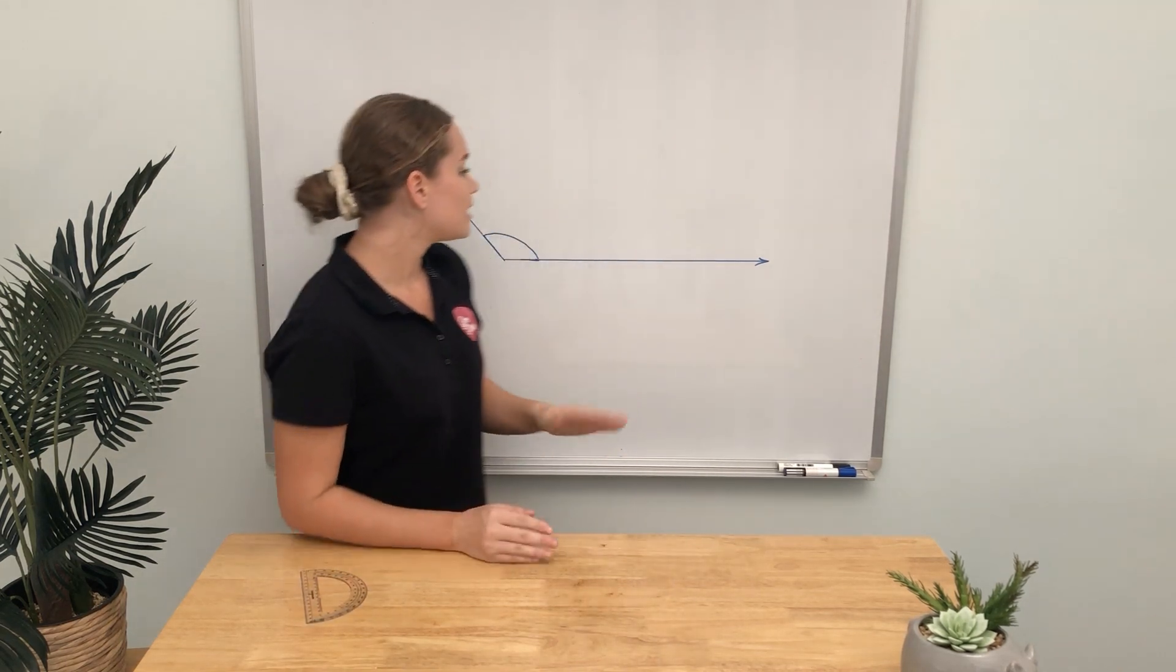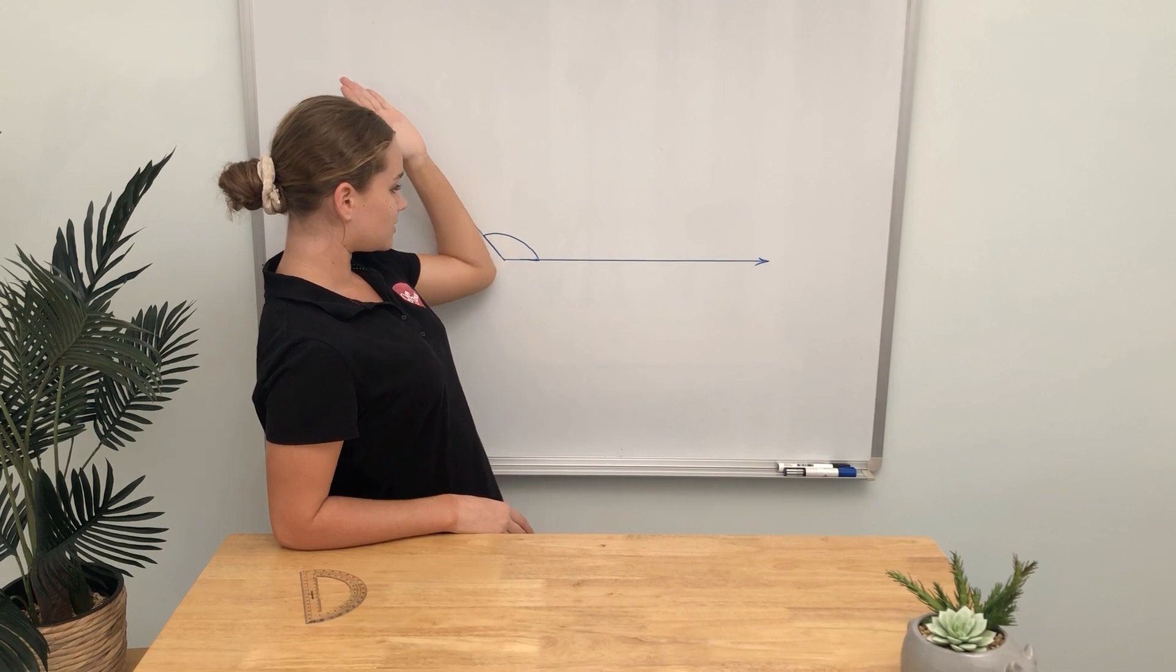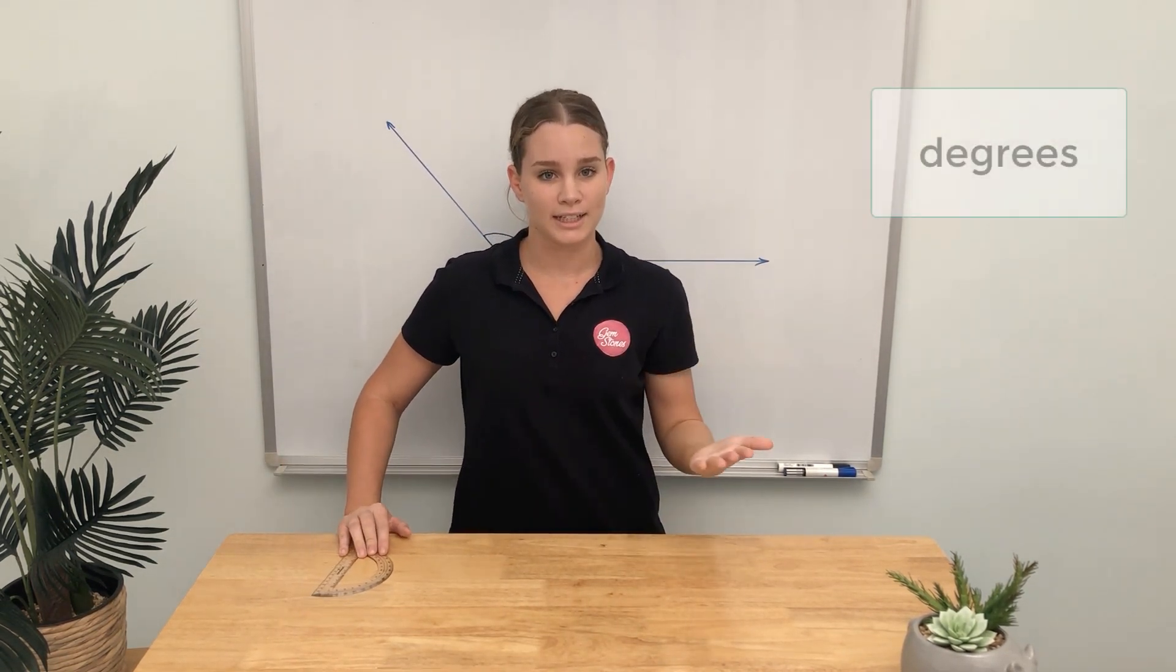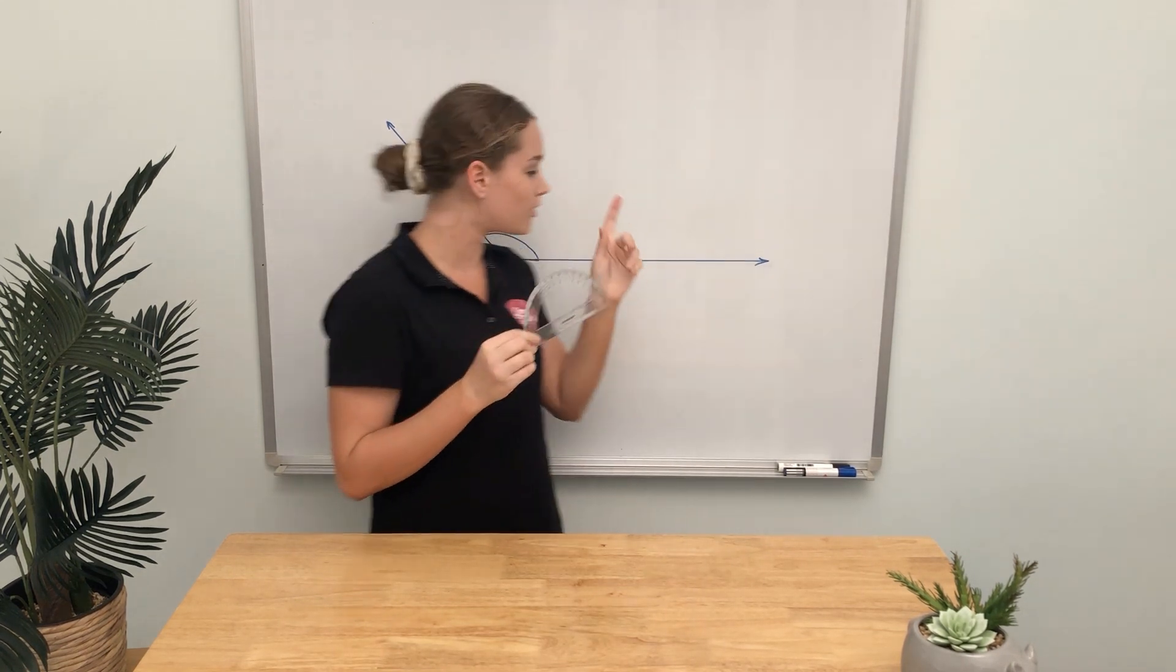Then we use a tool called a protractor. A protractor measures the turn between both lines. The unit of measurement we use is degrees. A protractor tells us the number of degrees of an angle.